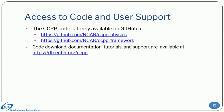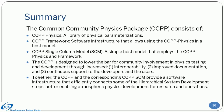The CCPP code is freely available on GitHub. Users and developers of the CCPP can easily access scientific and technical documentation, a user's guide, and an online tutorial on the DTC website. In summary, the Common Community Physics Package consists of CCPP Physics, CCPP Framework, and CCPP Single Column Model. The CCPP is designed to lower the bar for community involvement in physics testing and development through increased interoperability, improved documentation, and continuous support to developers and users. Together, the CCPP and the CCPP-SCM provide a software infrastructure that efficiently connects hierarchical system development steps, better enabling atmospheric physics development for research and operations.